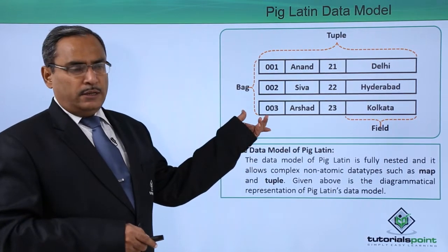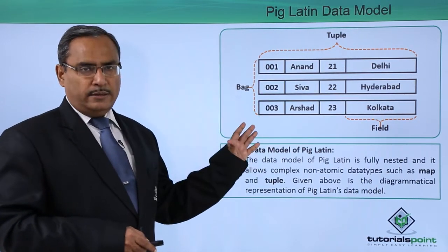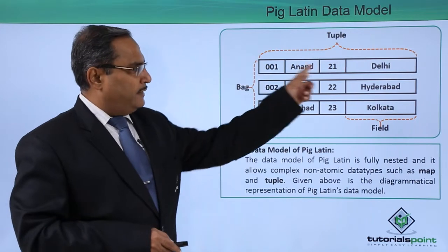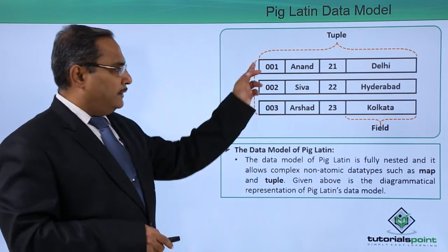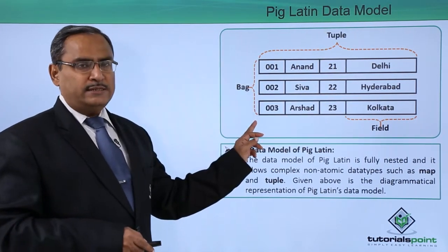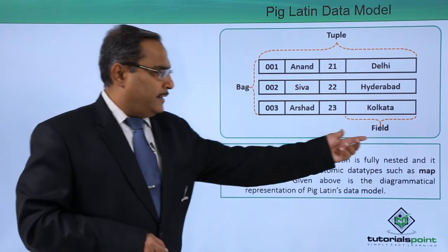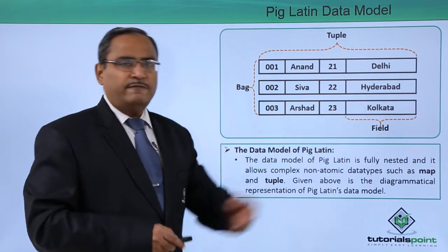Just consider this diagram. Here we are having the bag and the tuple. You can find that this row will be known as a tuple and this is a bag. The bag is consisting of multiple tuples and here it is a field and there is a field value.